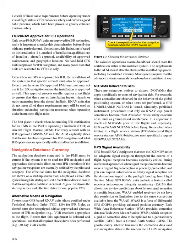Alternative means of navigation: to use some GPS-based RNAV units — those certified under technical standard order TSO-C129 — for IFR flight, an aircraft must also be equipped with an approved alternate means of IFR navigation, for example a VOR receiver, appropriate to the flight. Ensure that this equipment is on-board and operational, and that all required checks have been performed, for example, 30-day VOR check.